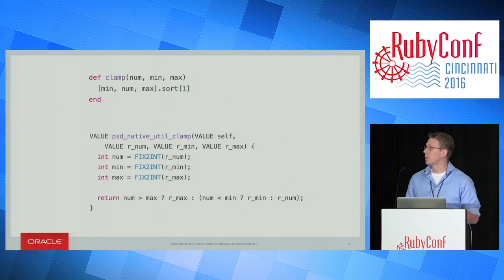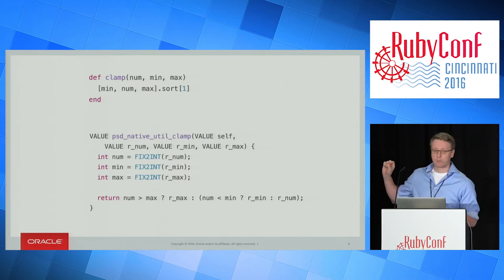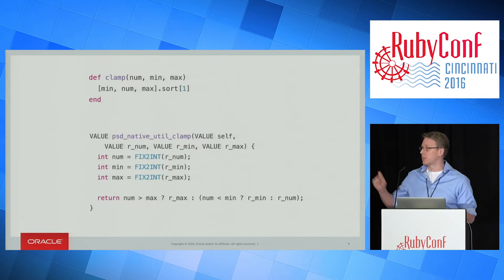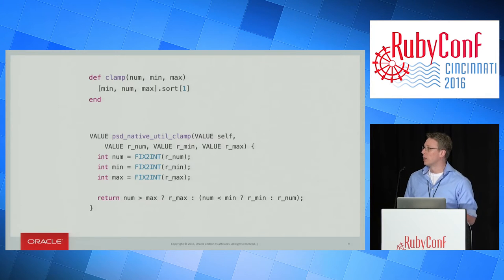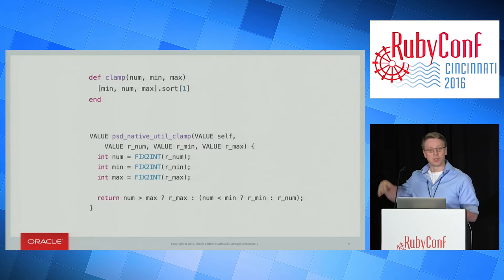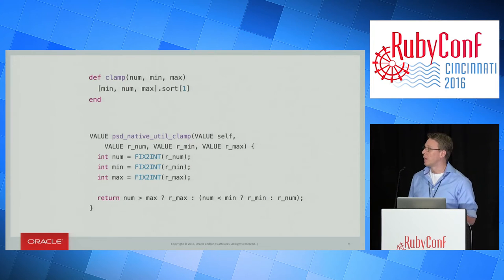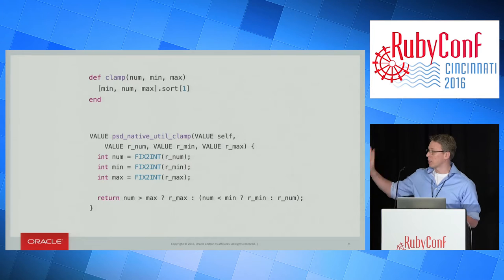In the C extension, they write a C function that makes the self parameter explicit. They convert the parameters from Ruby numbers to C numbers, and then use simple C logic to work out the value clamped between the two. That's faster because it doesn't do things like allocations or run a sort routine. And therefore that is an effective way to make it faster.